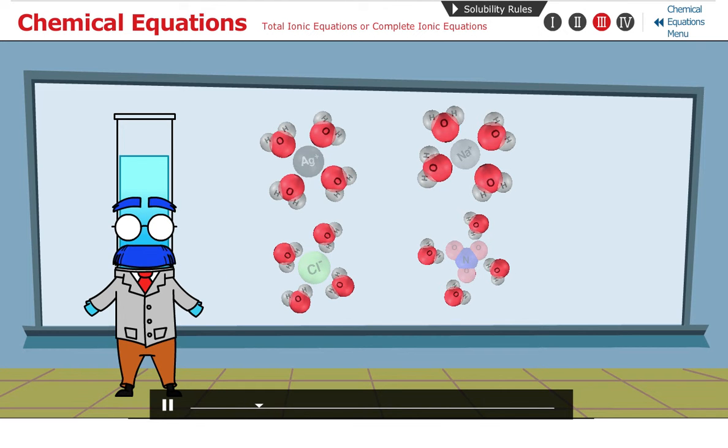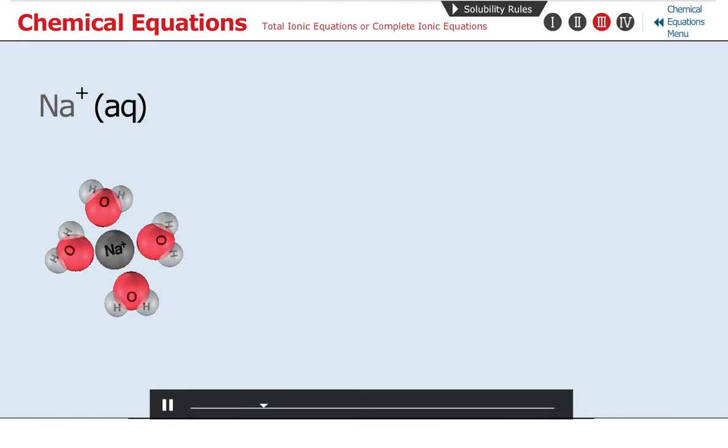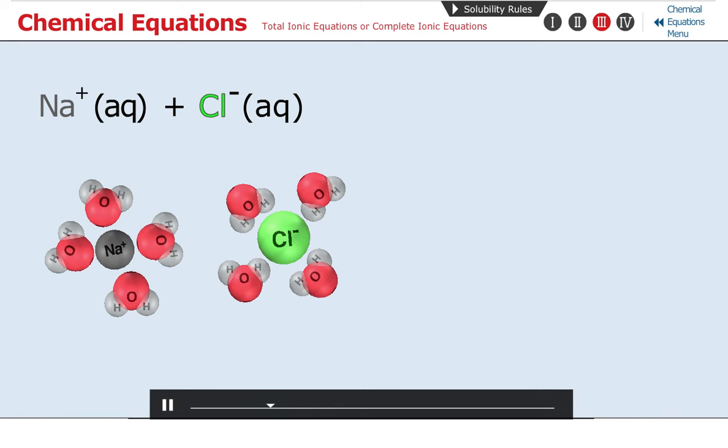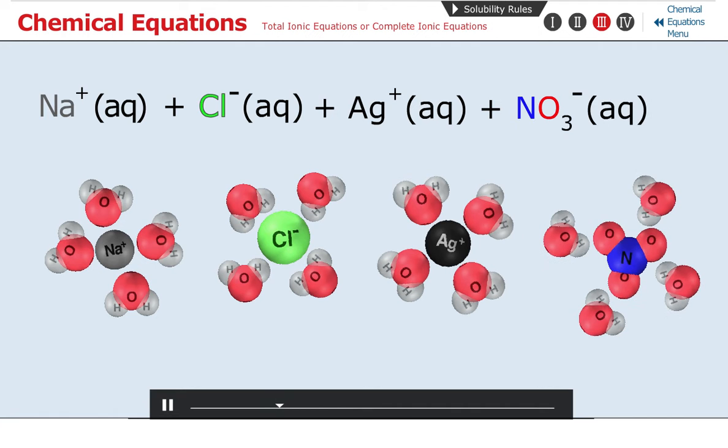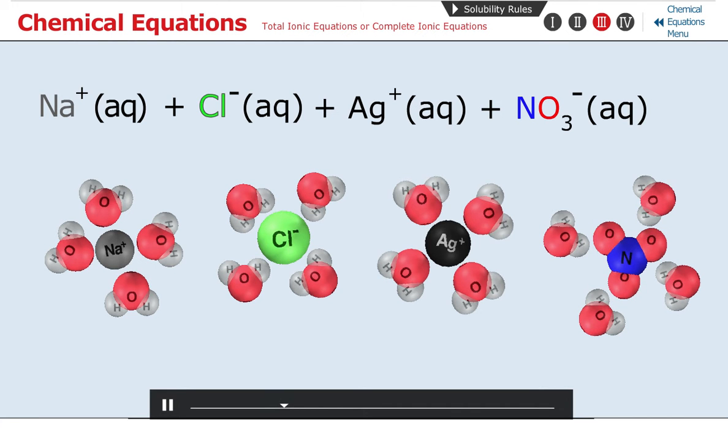Thus, we write Na positive Aq plus Cl negative Aq plus Ag positive Aq plus NO3 negative Aq, followed by an arrow.